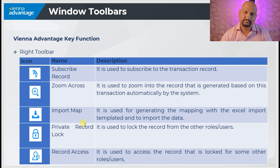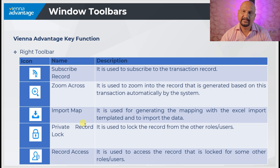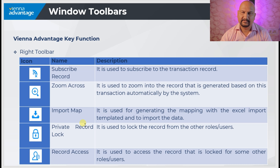These are the toolbars available in the VA system at the level of the windows. Importantly, the right toolbar is user-controllable — the admin user can hide whichever toolbar items are not needed on the right side. The top toolbar, however, cannot be changed since it is hardcoded in the system.